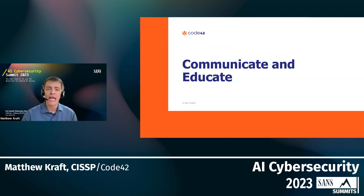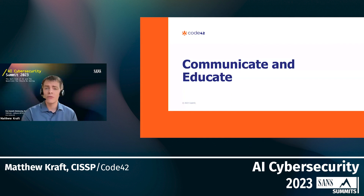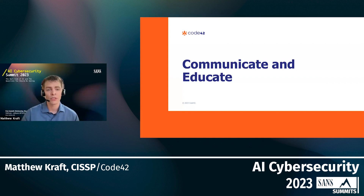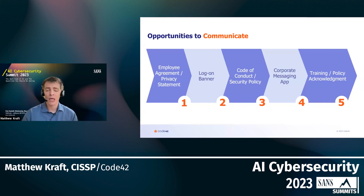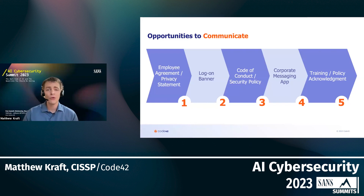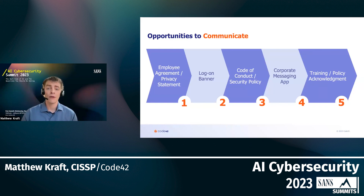After policies are defined, it's important to communicate and educate the employee population and all insiders about the company's stance. The company might say AI use is completely banned, or they might allow some use with caution around inputs and outputs, or they might have no opinion at all. Wherever on that spectrum, the company needs to communicate and educate on that policy. Best practices suggest using as many channels as possible: employee agreements, logon banners, regular posts on Microsoft Teams or Slack, and quarterly or annual security training — to inform the employee population of new tools, the risks they represent, and how to use them within your environment.